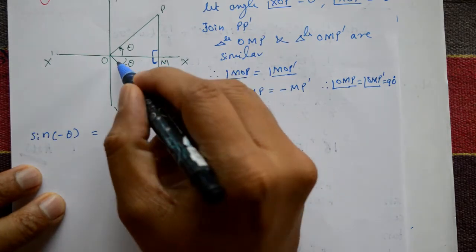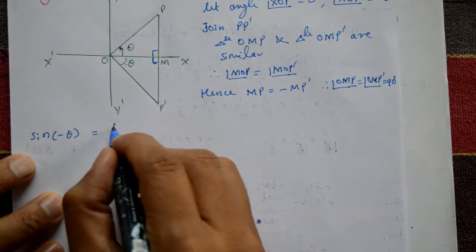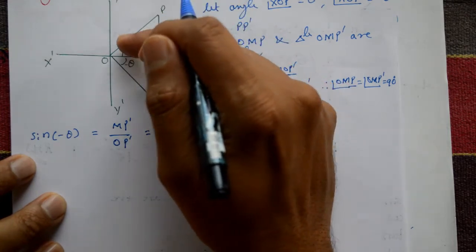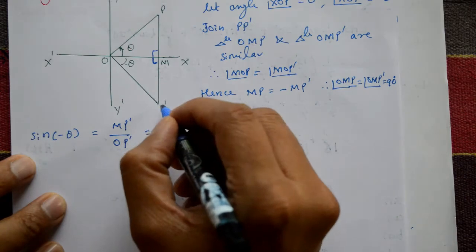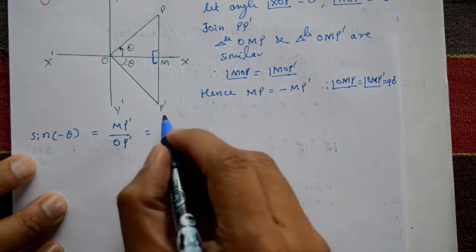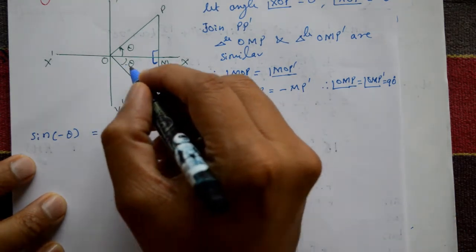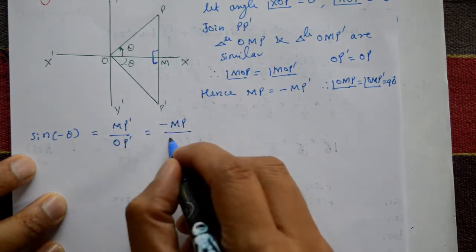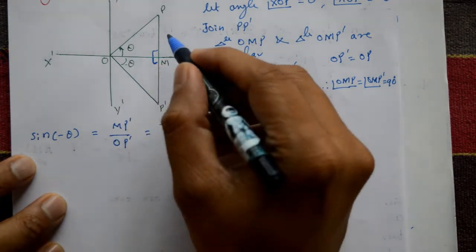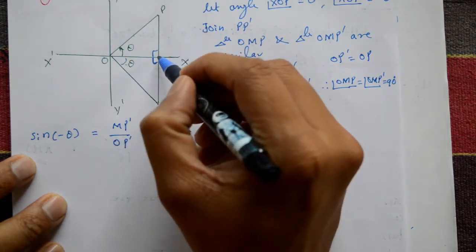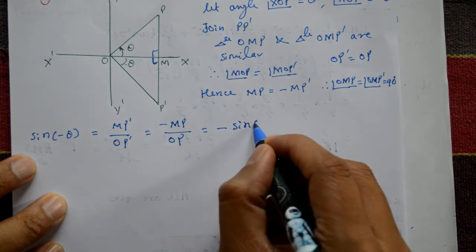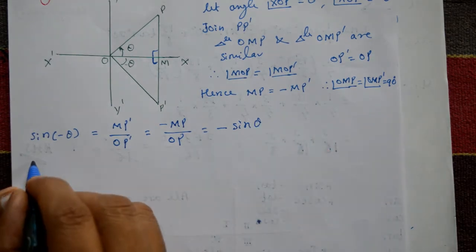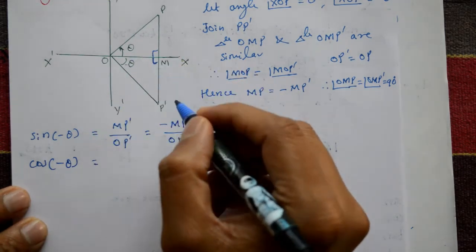Now for sine of minus theta: the opposite side over hypotenuse gives MP dash upon OP dash. Considering the first quadrant, MP dash is equal to minus MP. So minus MP upon OP dash — since OP dash equals OP (same radius vector) — gives minus MP upon OP, which is minus sine theta. Therefore, sine of minus theta is equal to minus sine theta.